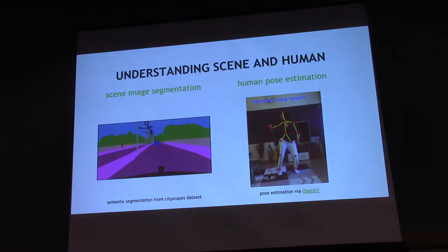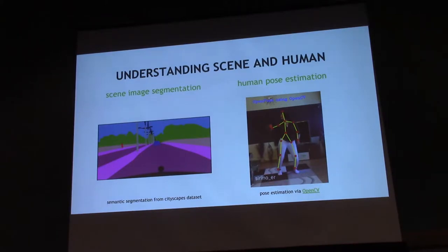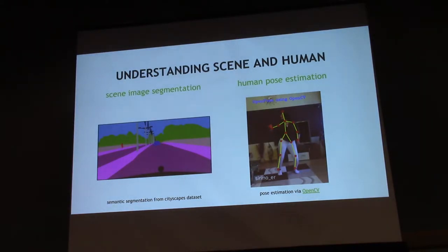Before I introduce the concept of affordance and how instance manipulation relates to it, let's first take a look at these two typical computer vision tasks. The left one is semantic segmentation for traffic scene images, and the right one is human pose estimation, both targeting understanding the content of the image.